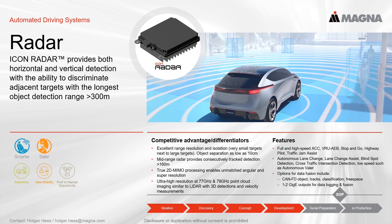I will give you a short overview of our radar device which is called ICON Radar. It provides horizontal and vertical detection with the ability to discriminate adjacent targets in a distance of more than 300 meters. The advantages of our radar are, for example, an object separation down to 10 centimeters, the possibility to replace a front radar by corner radars, and an ultra high resolution point cloud imaging capability which is comparable to lidars with 3D detections and velocity measurements. The radar provides object detection and classification which can be used for advanced driver assistance systems like autonomous emergency braking or adaptive cruise control.